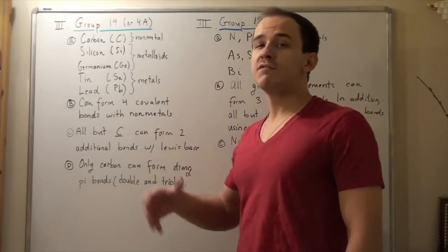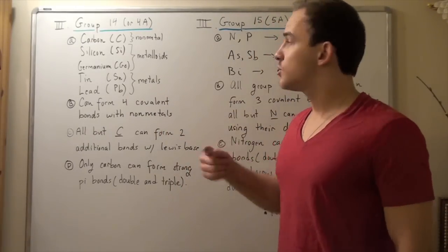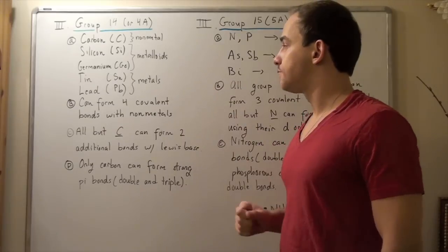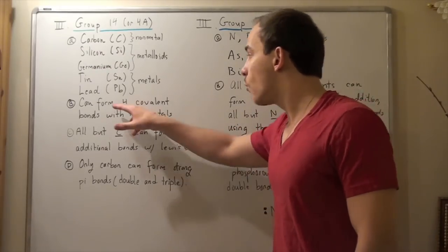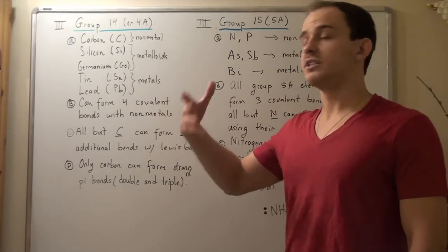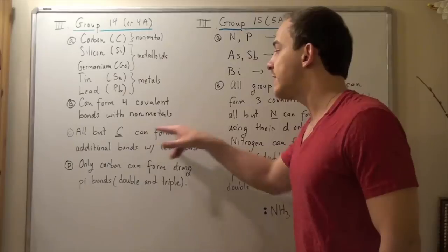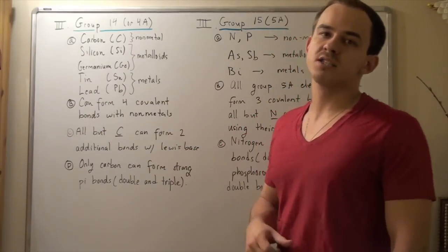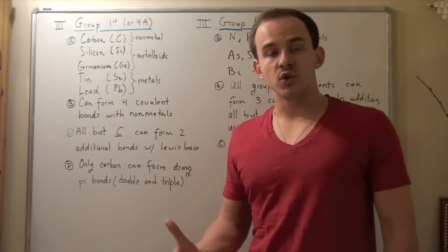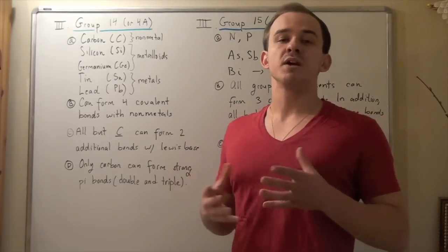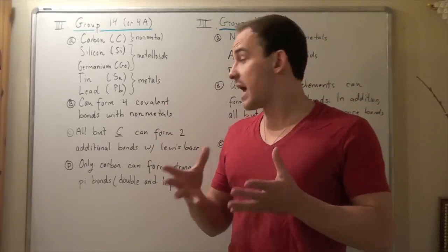Notice that in our group we have at least one of each — at least one nonmetal, at least one metalloid, and at least one metal. Now every single element within this group can form four covalent bonds with other nonmetals. And every atom, except carbon, can form two more additional bonds with Lewis bases. Remember, a Lewis base is simply an atom or molecule that has an extra lone pair of electrons that it can donate to some other Lewis acid.